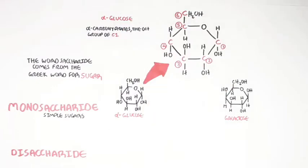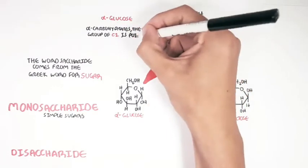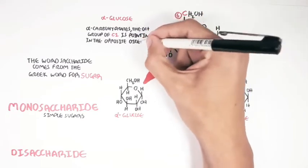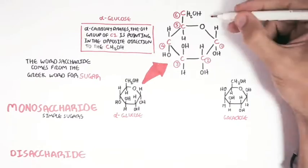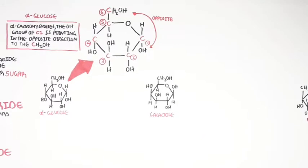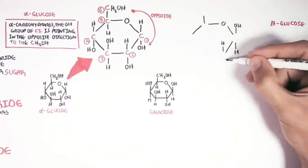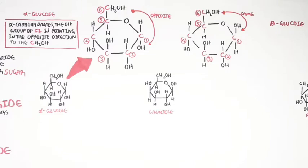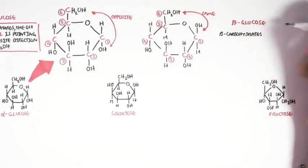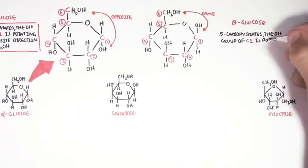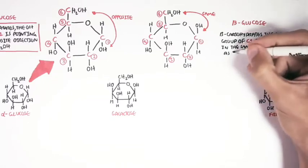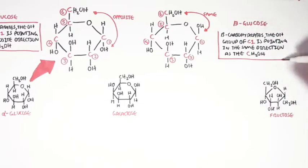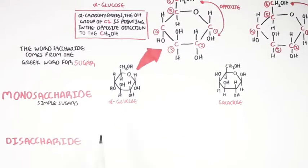Alpha carbohydrates is where the hydroxyl group — the OH group of carbon number 1 — is pointing in the opposite direction to carbon number 6. And there is another type of glucose known as beta glucose, where the hydroxyl group of carbon number 1 and carbon number 6 are pointing in the same direction. These alpha and beta configurations also apply to other types of carbohydrates, such as galactose and fructose.